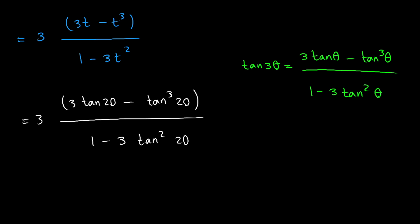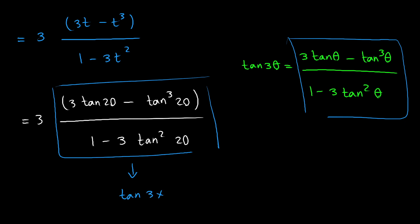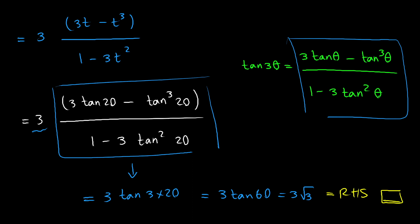Comparing our expression with the triple angle identity, we can see they are the same form. So we can replace the fraction with tangent of 3 times 20. With the factor of 3 out front, this equals 3 times tangent of 60, which equals 3 times square root of 3 — exactly the right hand side. This proves our equation.